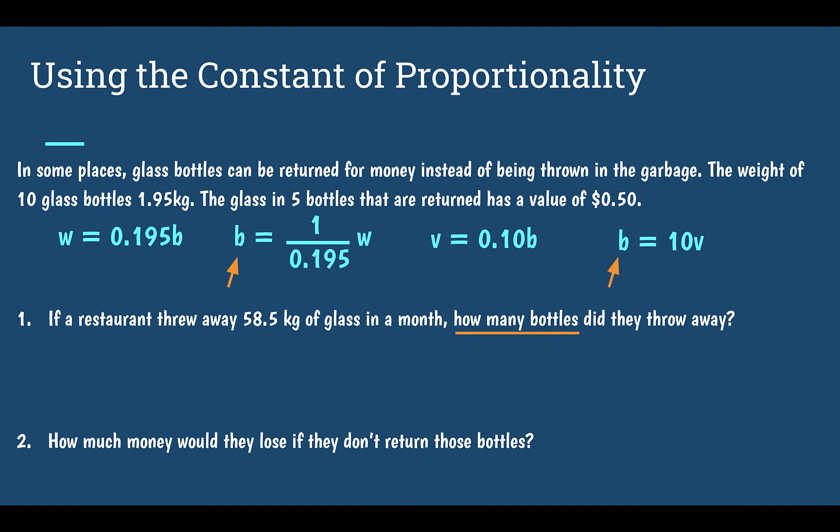Now I need to figure out which of those to use — do I want to use the one relating to W or V? It tells me 58.5 kilograms, which is our weight. So I want to use the one that has W.